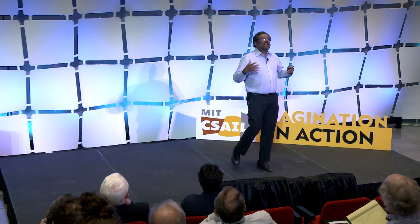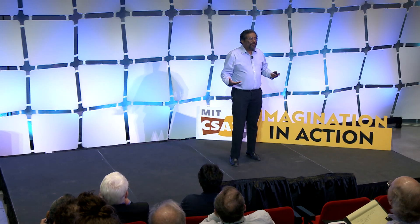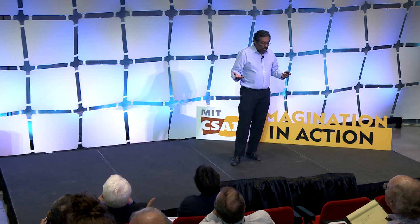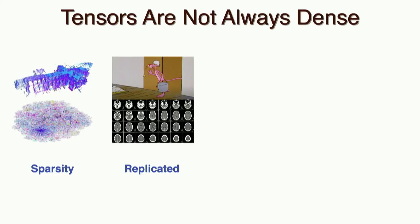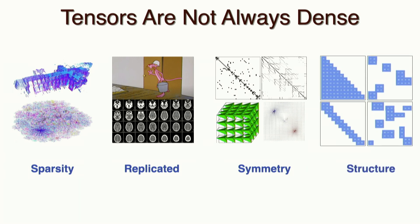The issue is the world is not dense. A lot of information in the world has much more structural properties — for example, sparsity. Or data is replicated. A lot of times you have runs of the same value in many different data sets. Or there are a lot of symmetrical properties of data, and a lot of structure embedded into the data we work on daily.